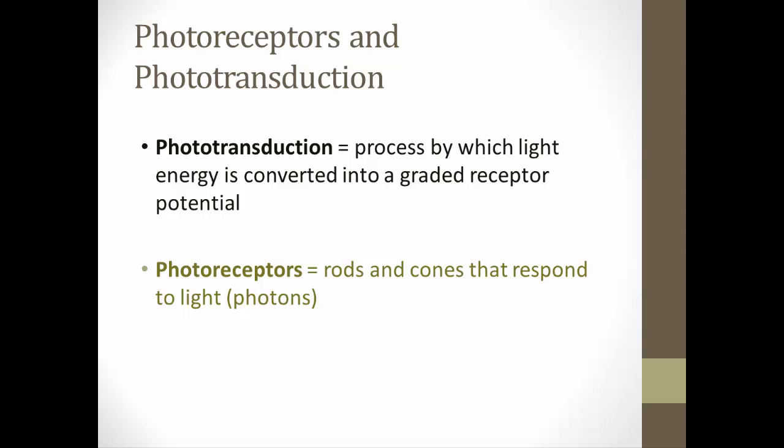Basically, we're taking light and converting it into a graded potential, not an action potential. Graded potentials are similar to action potentials, they just can't send a signal all the way down an axon, but this graded potential will eventually lead to an action potential down the ganglion's axon.